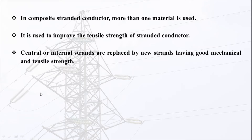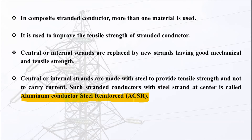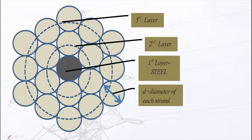For example, ACSR is a composite stranded conductor. ACSR stands for Aluminum Conductor Steel Reinforced. In an ACSR conductor, the central or internal strands are made up of steel, which has very good tensile and mechanical strength. In this way the overall tensile strength of the conductor is improved, because steel is used at the center. The steel conductor is used to provide tensile strength only and does not carry any current.